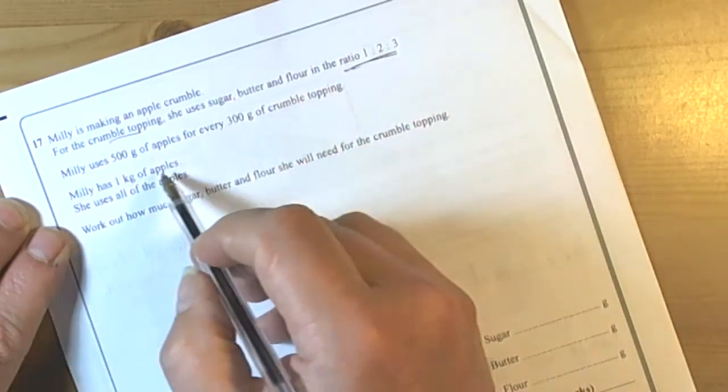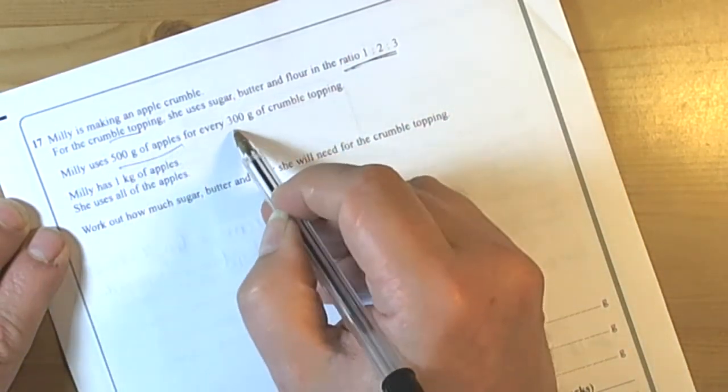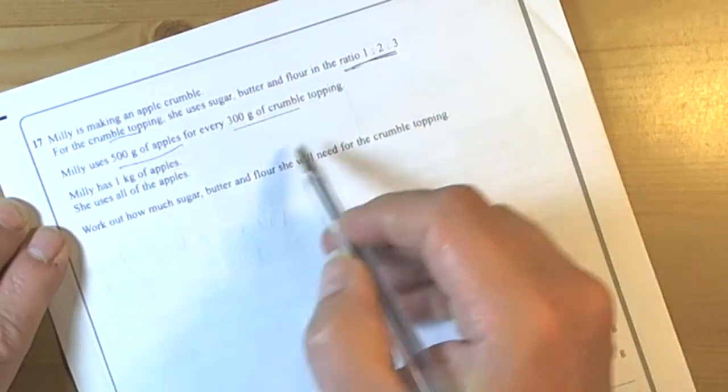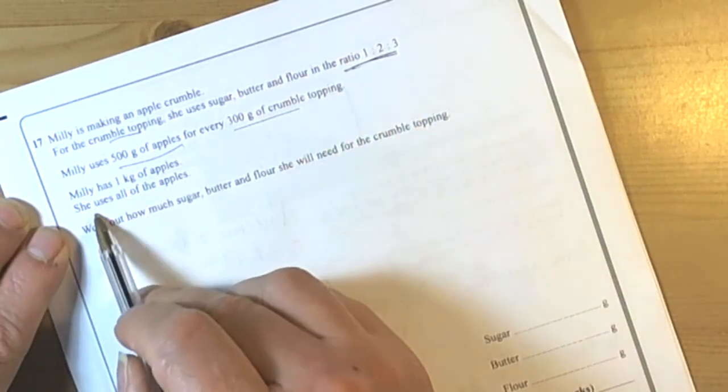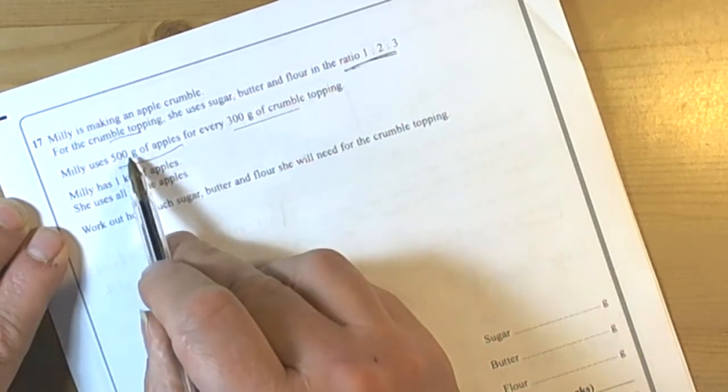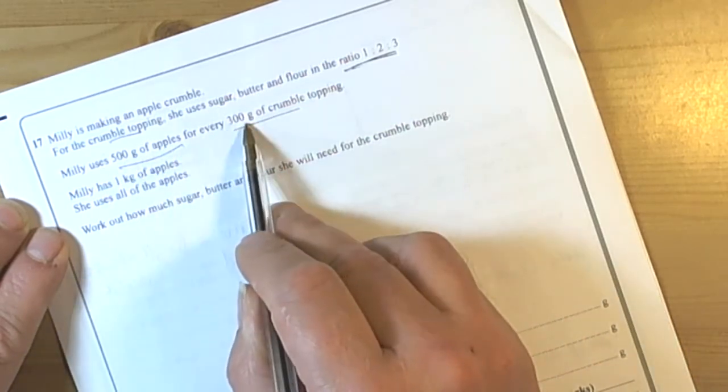crumble topping. And she uses 500 grams of apples for every 300 grams of topping. So she's got a kilogram of apples and she's going to use all her apples. So as it's 500 grams for every 300 grams of topping,